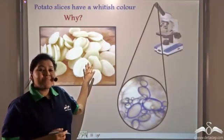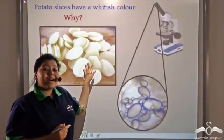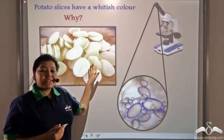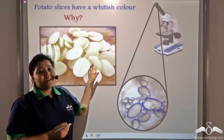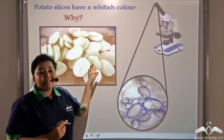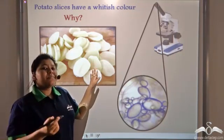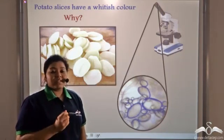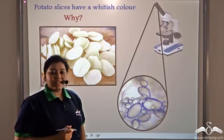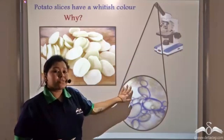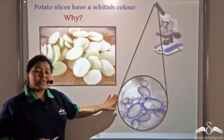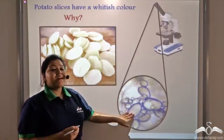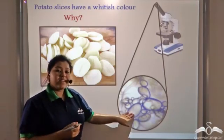Potatoes — something that you all love. Now can you tell me why potato slices have a white appearance? That is because potatoes have an abundance of leucoplasts that store starch in them. You can carry a simple experiment: just take a potato slice, stain it with iodine which is specific for the starch granules present inside the leucoplasts, and observe it under the microscope. You will see purple granules of starch, and this proves that potatoes have an abundance of leucoplasts in their cells.